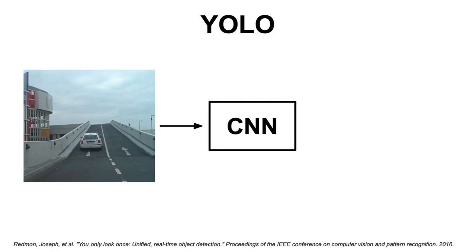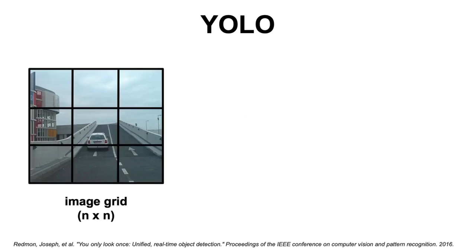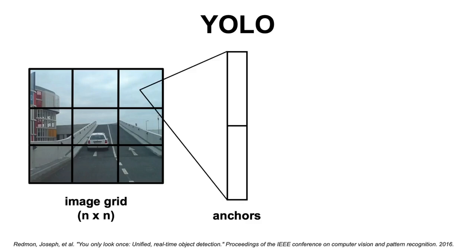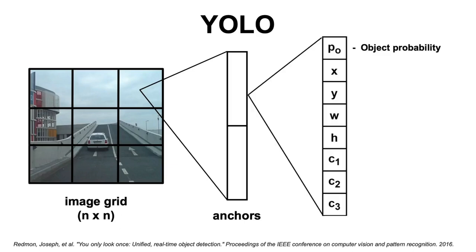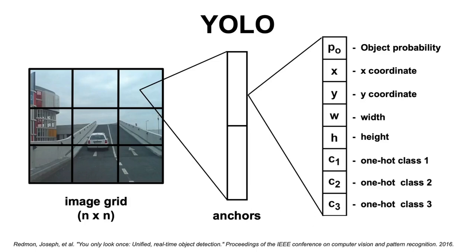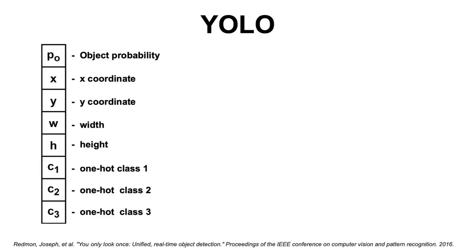To achieve that, we use multiple convolutional layers, resulting in an n by n by c tensor at the output. The first two dimensions can be projected back into a grid in the original image, and for each cell we have multiple anchor predictions represented by the channel dimension. The values in each anchor are interpreted as follows: the first value is the probability of this anchor containing an object; the following four values represent the bounding box of the object; and the following n values are the one-hot encodings of the classes we are trying to predict. We stack those anchors in the channel dimension and train the model to predict them.